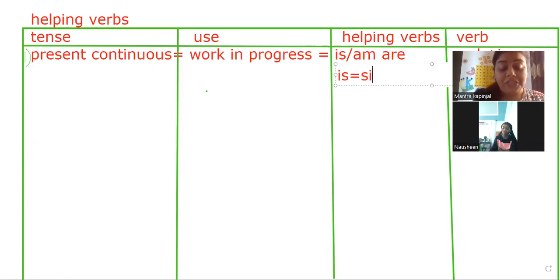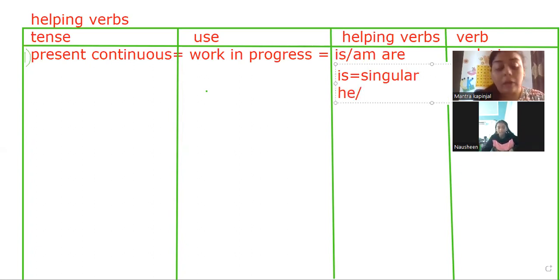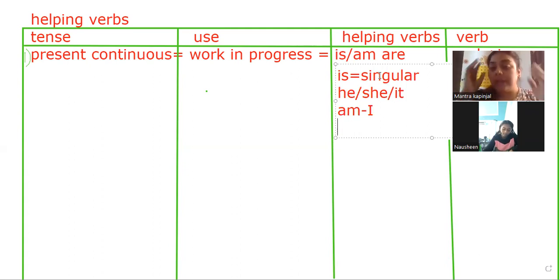Is we use with singular subjects. If the subject is singular, we use is. With singular pronouns like he, she, and it, we use is. Am we use with only one pronoun, that is I. Examples: I am a girl. I am sitting. I am running. She is walking. She is running. She is jumping. He is going there.